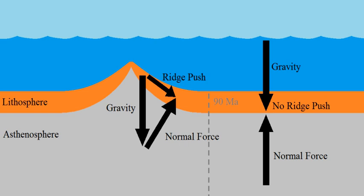These raised features produce ridge push. Gravity pulling down on the lithosphere at the mid-ocean ridge is mostly opposed by the normal force from the underlying rock, but the remainder acts to push the lithosphere down the sloping asthenosphere and away from the ridge.